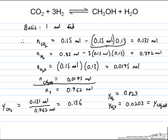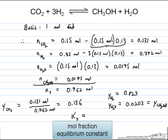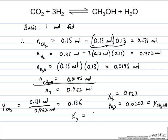Now we can take these mole fractions. If we want, we can determine the value of our ky, our mole fraction equilibrium constant. That will be equal to the mole fractions of the products over the mole fraction of CO2 times the mole fraction of hydrogen to the third power. If we just plug in all the values for y, we get 0.0054 for the mole fraction equilibrium constant.